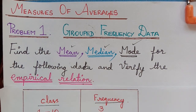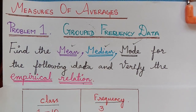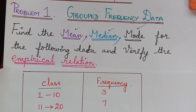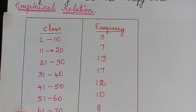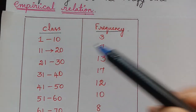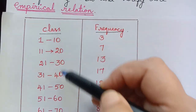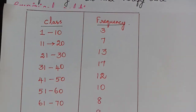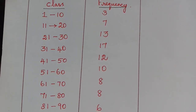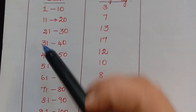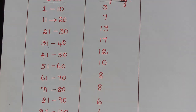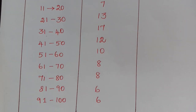The given data is in the form of class intervals — they are grouped data. If you see here, we have the classes and the corresponding frequencies.